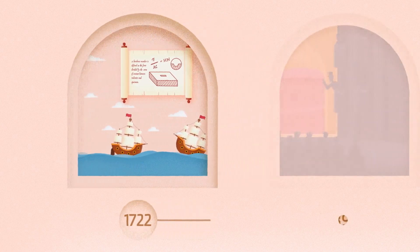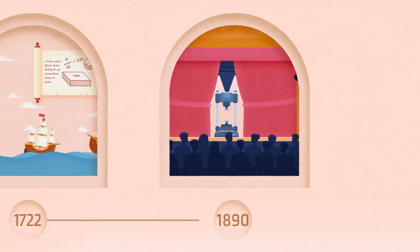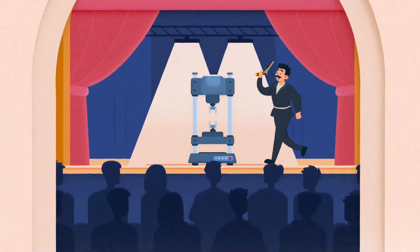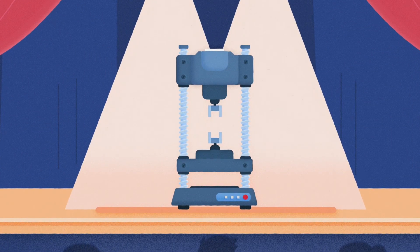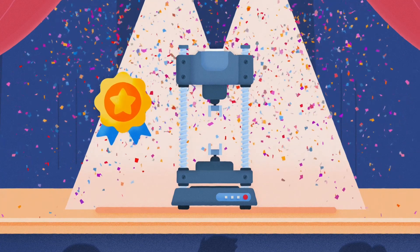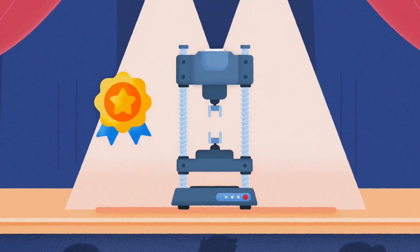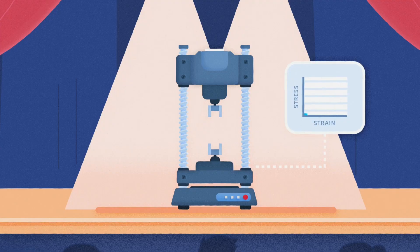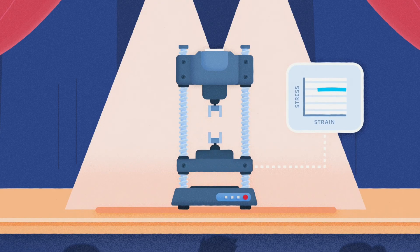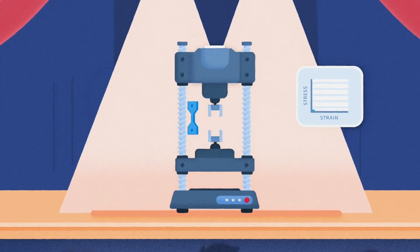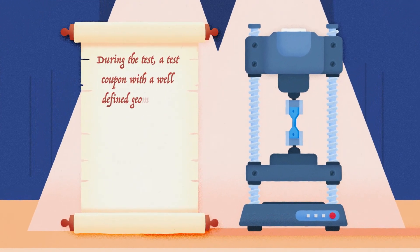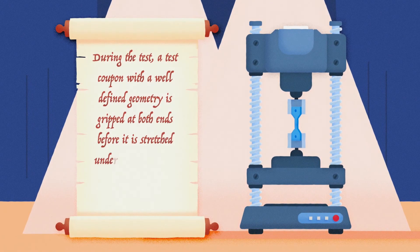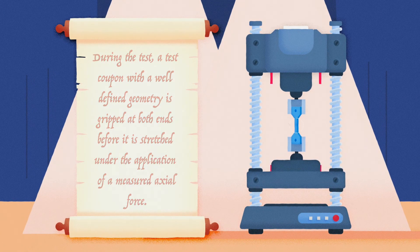At around 1890, late in the 19th century, early tensile test machines started to become available. The tensile test has remained since then the gold standard in mechanical testing and it continues to be the go-to method for measuring stress-strain curves. During the test, a test coupon with a well-defined geometry is gripped at both ends before it is stretched under the application of a measured axial force.